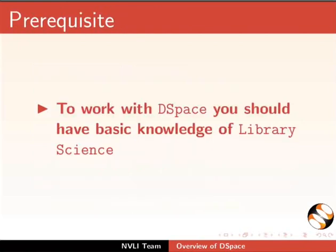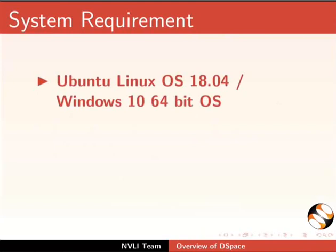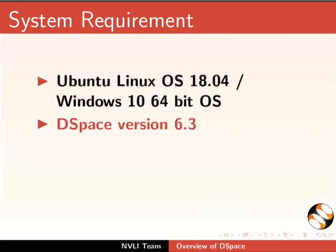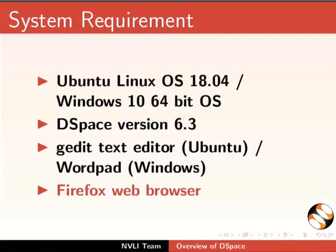To work with DSpace, you should have basic knowledge of library science. Throughout this series, we will be using Ubuntu Linux OS 18.04 or Windows 10 64-bit OS, DSpace version 6.3, G-Edit text editor for Ubuntu or WordPad for Windows, and Firefox web browser. However, you may use any other browser and text editor of your choice.